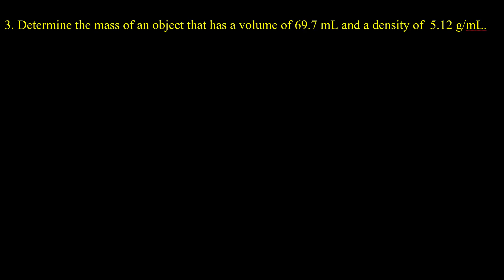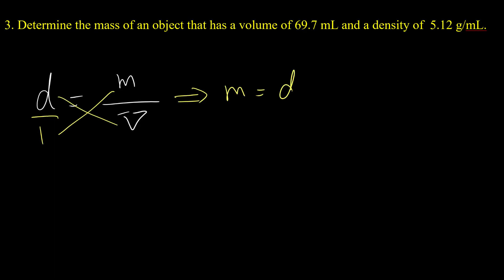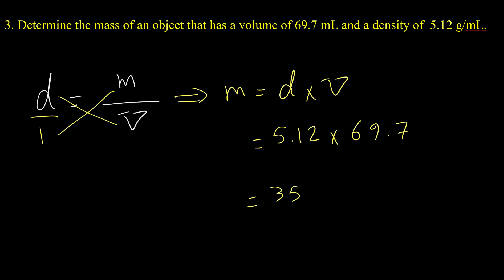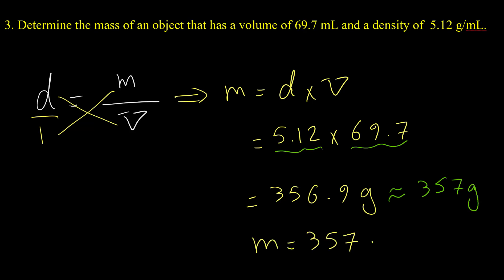Here is the third example: determine the mass of an object that has a volume of 69.7 milliliters and a density of 5.12 grams per milliliter. Rearranging the density equation, mass equals density times volume: 5.12 times 69.7 equals 356.9 grams. Applying significant figure rules (three significant figures each), the final answer is 357 grams.